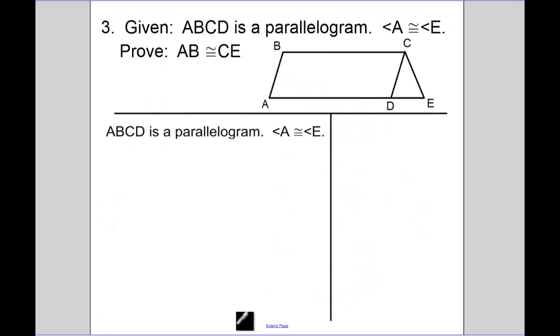A proof. We are given ABCD is a parallelogram, and angle A is equal to angle E. I need to prove AB is equal to CE. Well, I know in a parallelogram, opposite sides are going to be congruent. I already have my given written out.